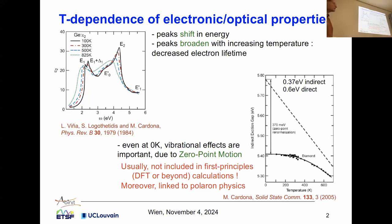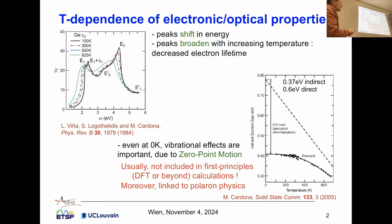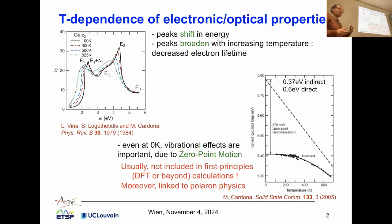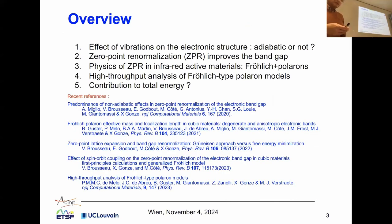As an example, as a function of temperature, one has experimental points for the bandgap, and actually without any vibrational contribution, keeping the atom positions frozen, the bandgap would be here — about 0.4 electron volt higher. So usually these zero-point motion effects are not included in first-principles calculations, and moreover they are linked to polaron physics.